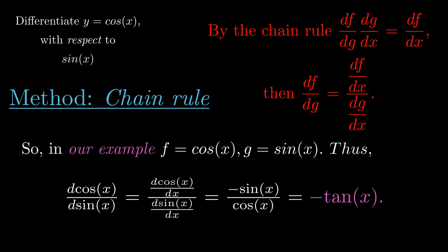We know how to evaluate these derivatives. Doing so we get minus sine of x divided by cosine of x, which equals minus tangent of x, and that's the final answer to this problem.